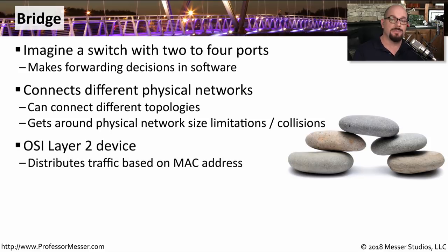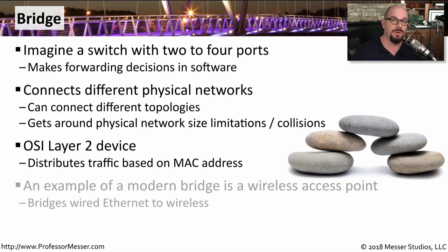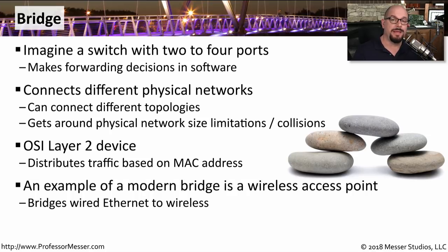Just like today's modern switches, these older style bridges would make forwarding decisions based on the destination MAC address inside of a frame. A good example of a modern bridge connecting different types of networks would be today's wireless access points. You would have a wireless network on one side and a wired ethernet network on the other, bridging between these two different topologies.